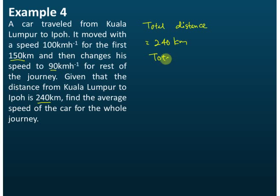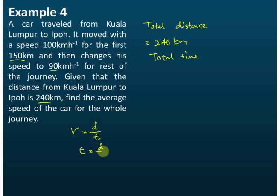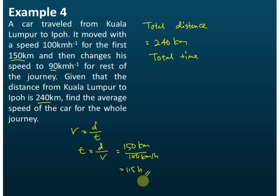For the total time taken: the question says the car moves at 100 kilometers per hour for the first 150 kilometers. From the formula v = d/t, we get t = distance divided by speed. The distance traveled is 150 kilometers and the speed is 100 kilometers per hour, so the time taken is 1.5 hours for the first 150 kilometers.